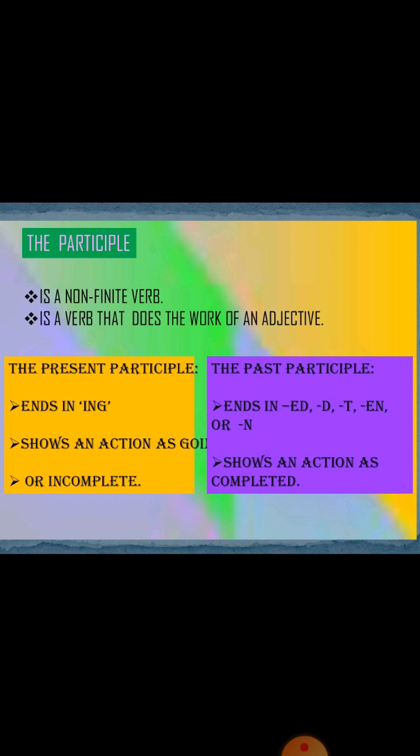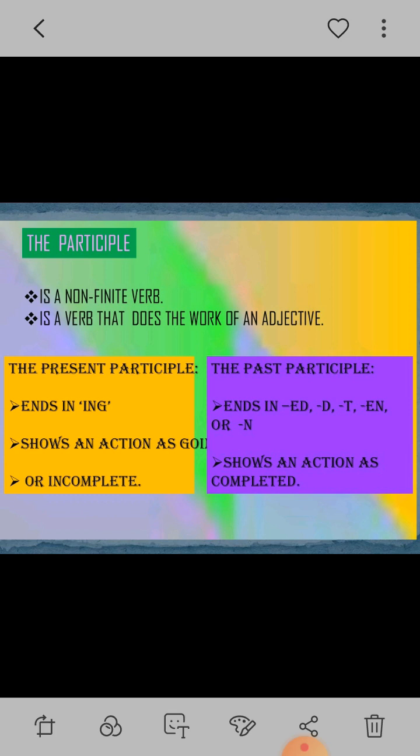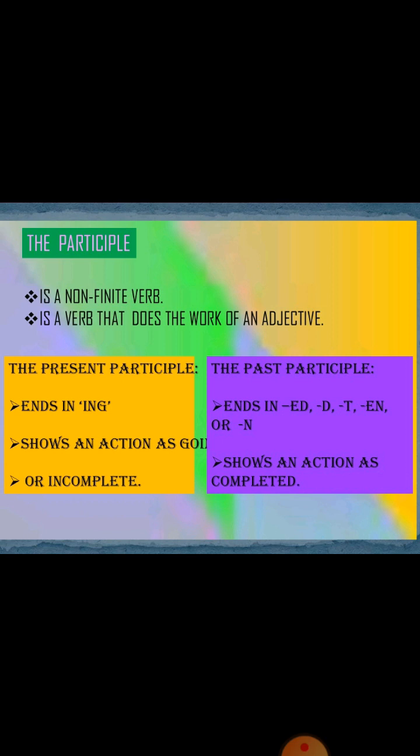Now it is the participle verb. Participle can be present participle and past participle. The present participle ends in -ing and shows an action in a sentence as incomplete. The past participle ends in -ed, -d, -t, -en, or -n, and shows an action as completed.